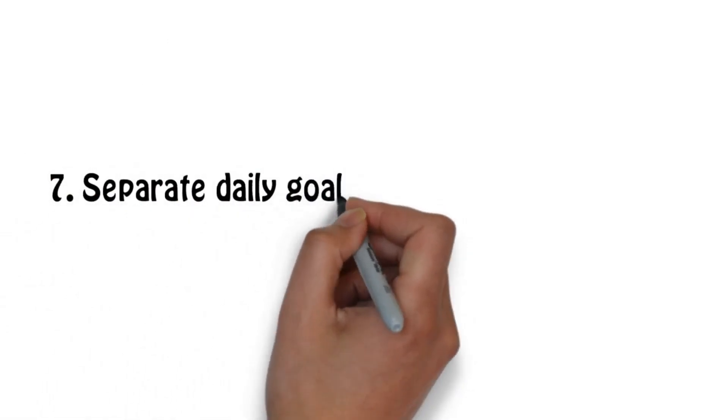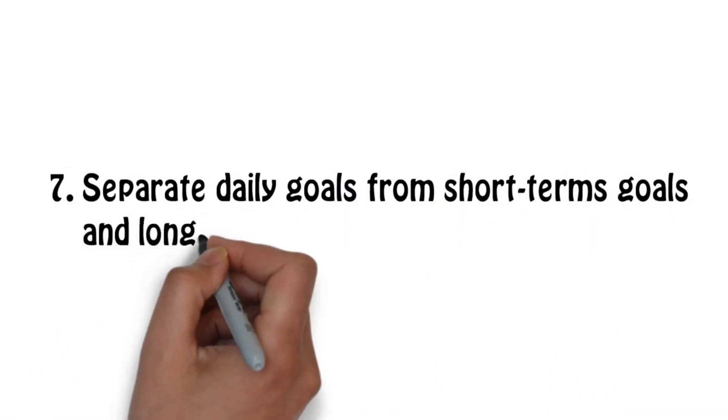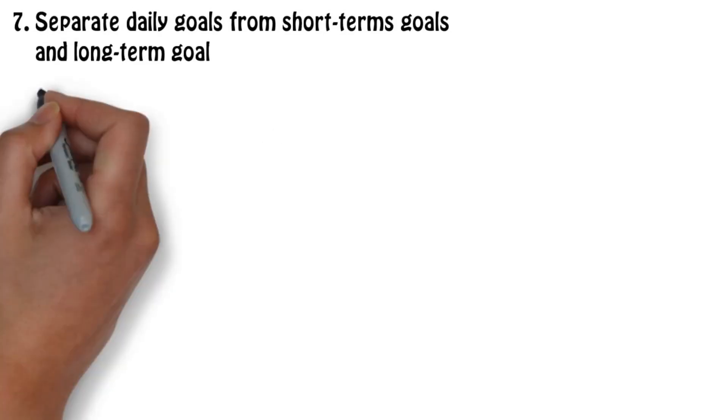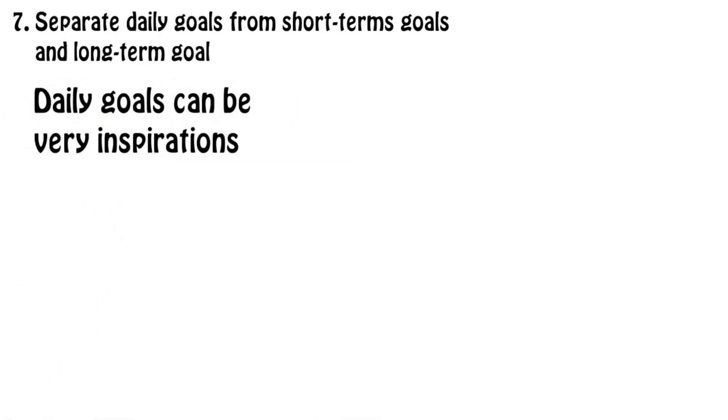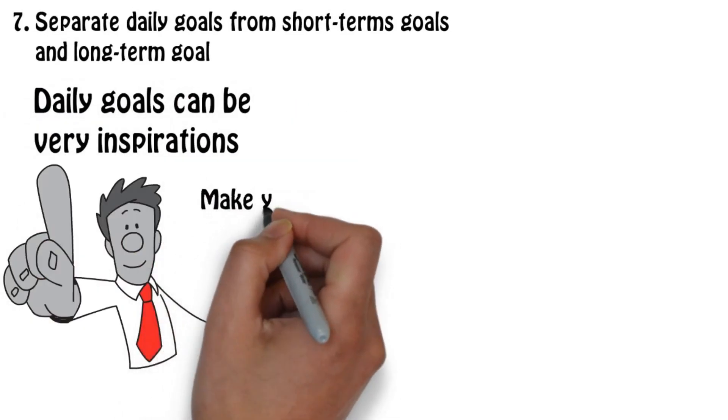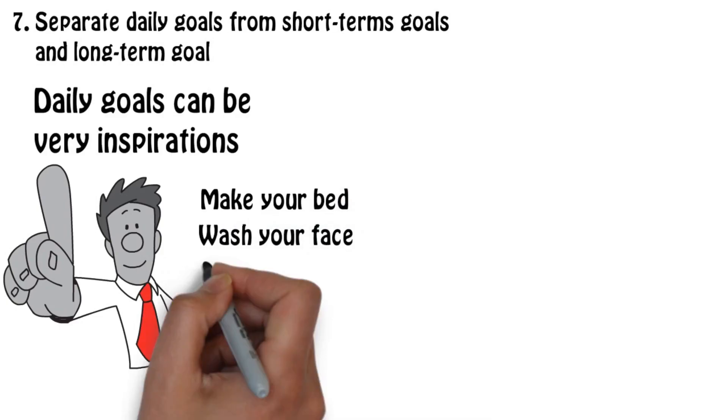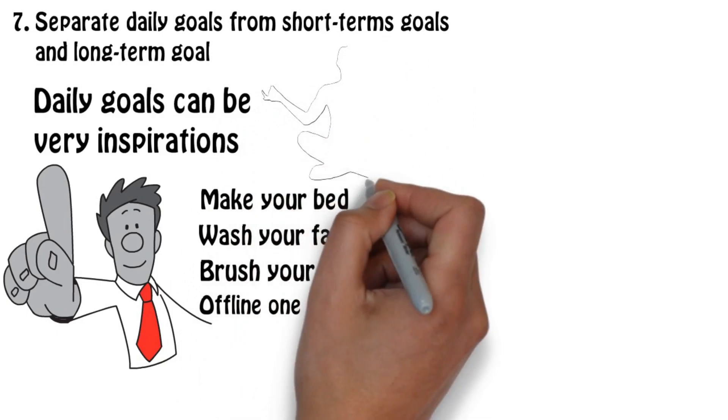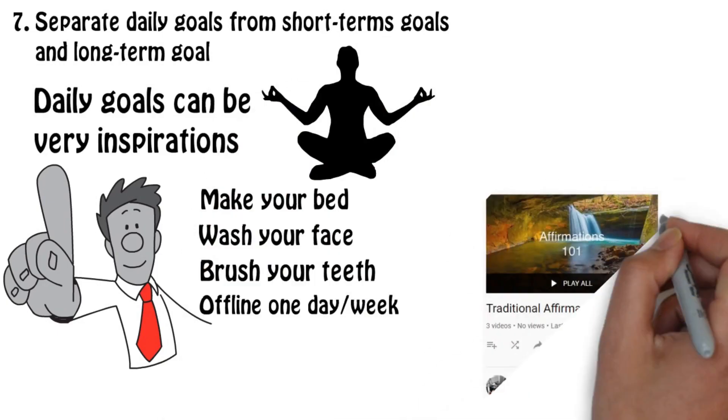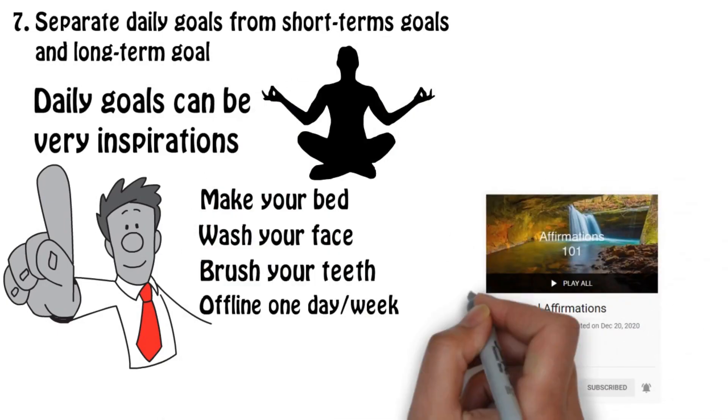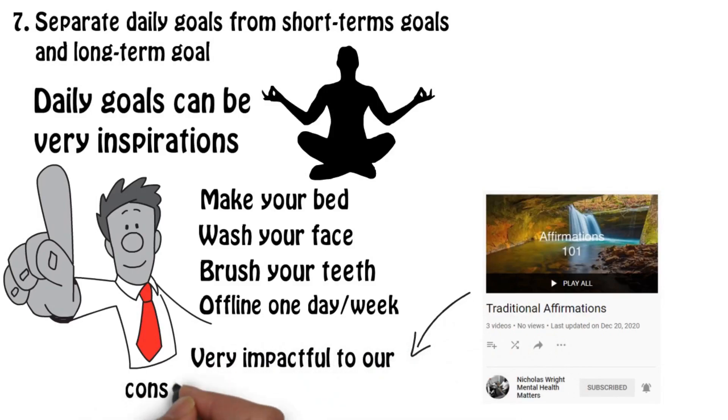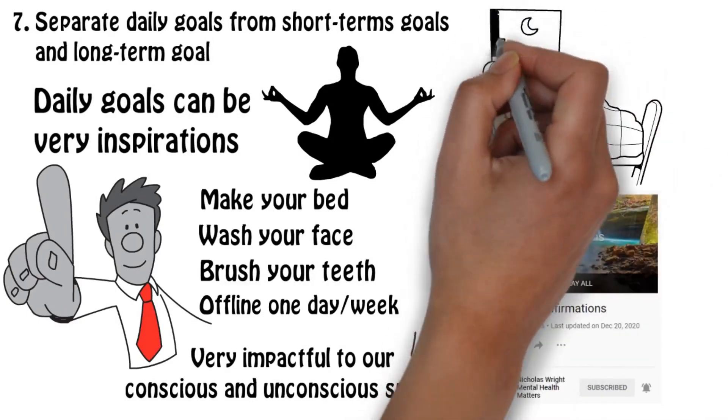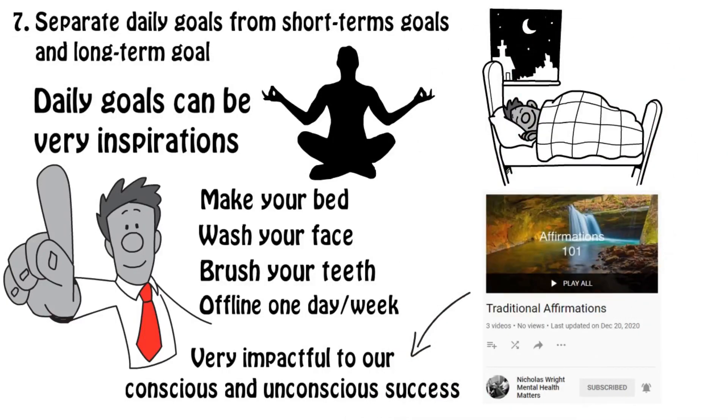Number 7: Separate daily goals from short-term goals and long-term goals. Daily goals can be very inspirational. Something as simple as making sure you make your bed, wash your face, brush your teeth, stay offline one day per week, maybe take a couple minutes to yourself and meditate or listen to my daily affirmation videos. These things can be very impactful to our conscious and unconscious success. And if you have a bad day, at least you're coming home to a bed that's made and ready for you.